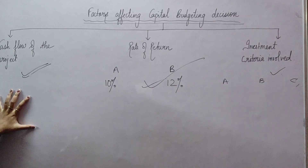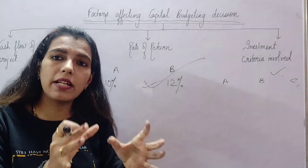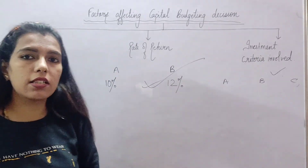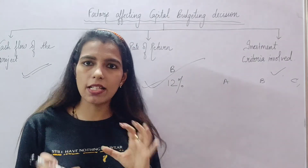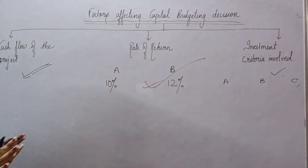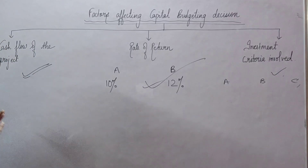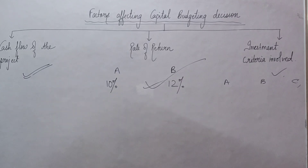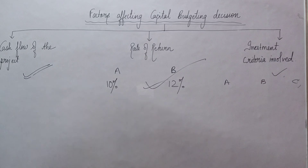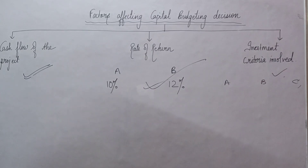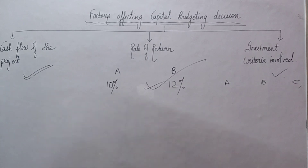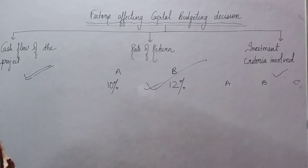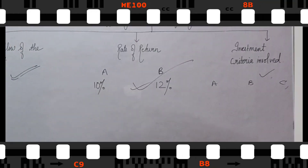These additional factors are covered under investment criteria, which can influence your investment decisions along with cash flow and rate of return. Today we covered investment decisions. This topic is small but one question can become tricky. After attending this lecture, you must read NCRT because there are small details discussed here that are important from the exam point of view. If you have any doubt, you can mention it in the comment box.